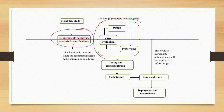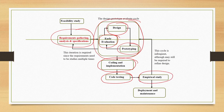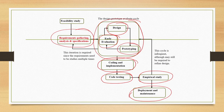Then we have the design-prototype-evaluate cycle, involving the design stage, prototyping stage, and evaluation stage. Design involves both interface design and code design. Then we have the coding and implementation stage, testing of the code, a final stage to ascertain the usability of the overall system through empirical study, and finally deployment and maintenance. Other stages will come in subsequent parts of the lecture. Currently we are focusing on the requirement gathering stage.